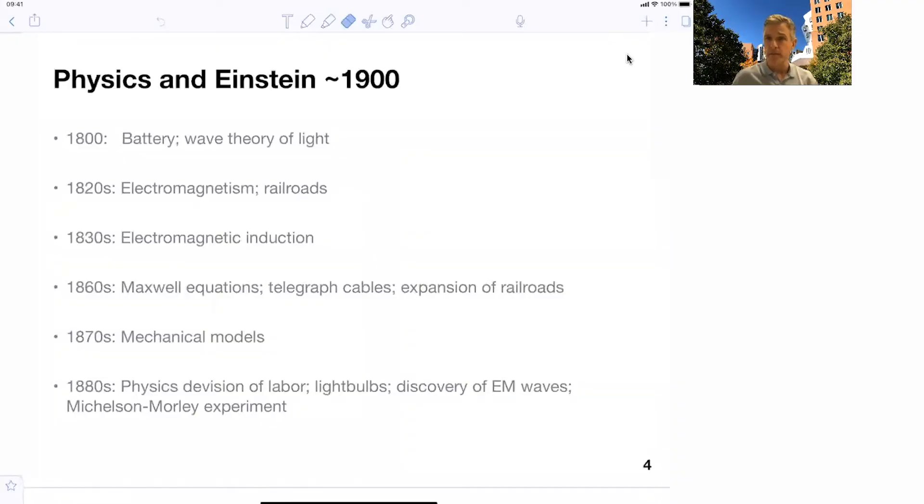In the very same time, in Europe, the first railroad systems were developed. Electromagnetic induction was understood. And then in the 1860s, Maxwell was able to put all of those concepts together in his famous Maxwell equations, which are discussed at length in 802.